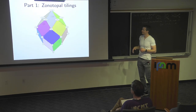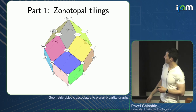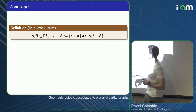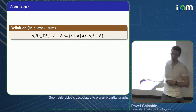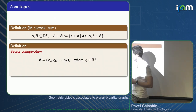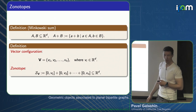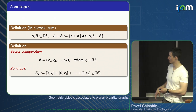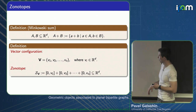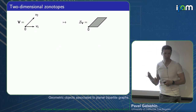Let me talk about the first kind of geometric object, which is three-dimensional. I'll start with the definition of Minkowski sum. If you have two sets in R^d, their Minkowski sum is just the set of pairwise sums. I'm going to take a vector configuration — a bunch of vectors — and associate to it a zonotope, which by definition is the Minkowski sum of line segments from zero to each vector.